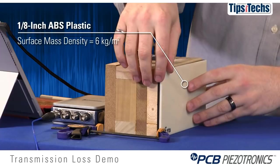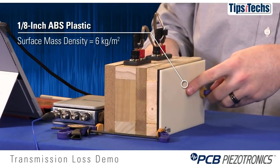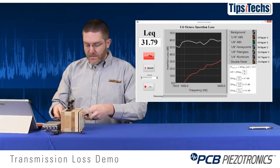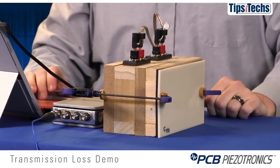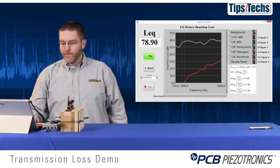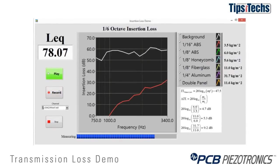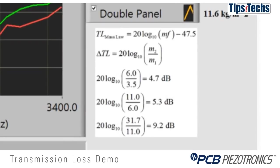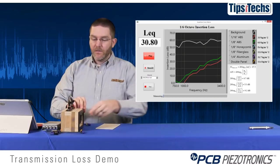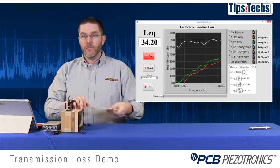Next we'll move to the same material — this is also ABS but twice as thick. This is 1/8-inch thick and its surface mass density is 6 kilograms per meter squared. The green curve shows the transmission loss of the 1/8-inch ABS. The mass law calculations on the right side of the screen predict a 4.7 dB increase in insertion loss between the last two materials. We don't really see that until high frequencies, likely due to leak area around the gasket with thin material.